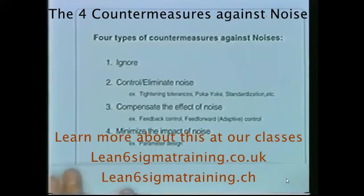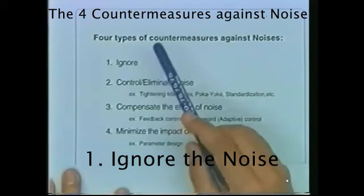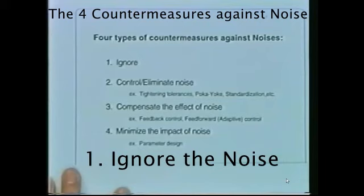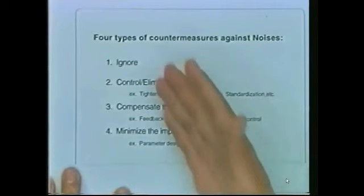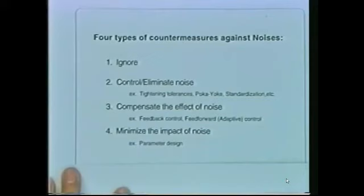The first thing we could do is, of course, ignore noise. One of my colleagues insists this is a valid countermeasure — he claims that in some cases, people are controlling things they don't have to control. If certain noise is not important, we don't have to control it; we can ignore it. However, in most cases, ignoring is a problem — later on, it's going to cause a problem.